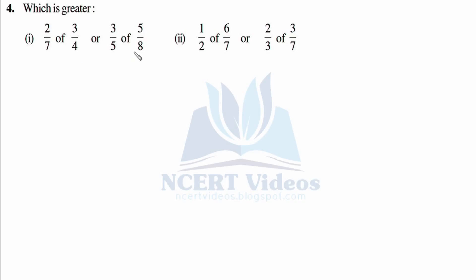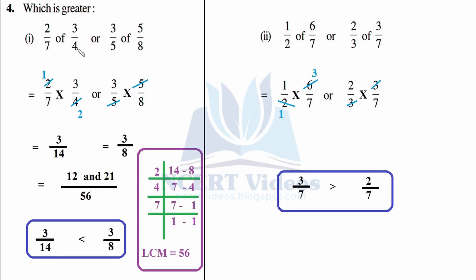The whole concept is to make you understand that 'of' in mathematics means multiplication. So we solve 2/7 of 3/4 and 3/5 of 5/8 — place a multiplication sign when you see 'of.' Solving: 1 times 2 is 2, 2 times 2 is 4, giving 3 over 14. And 5 fives cancel, giving 3 over 8.